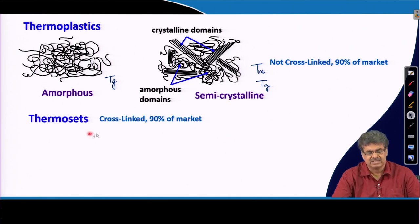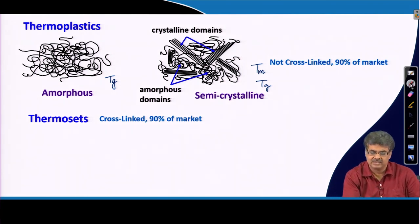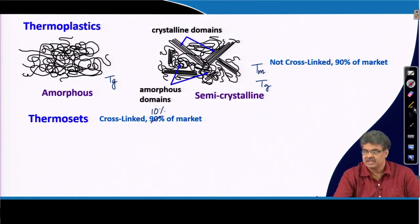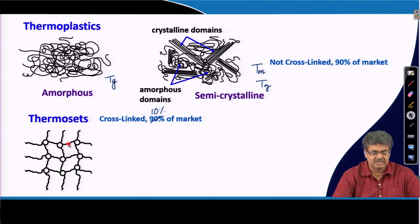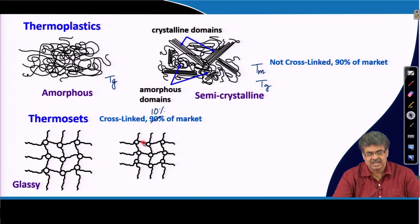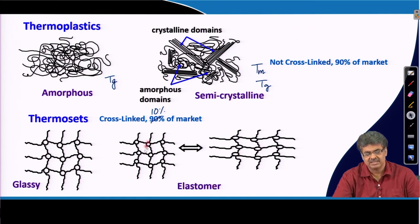Thermosets, which are cross-linked materials, make up about 10% of the market. For thermoplastics used below their Tg, the polymer chains behave as glassy material, which is very difficult to process. If the temperature is above the Tg, the polymer chains are flexible and can be stretched — we call these elastomers. Therefore, if you want to process thermosets, the temperature needs to be higher than the Tg of the constituent material.